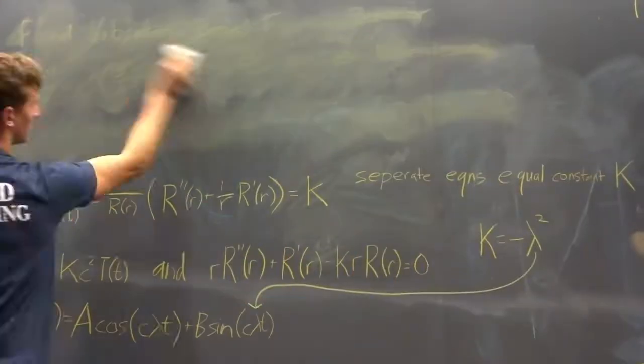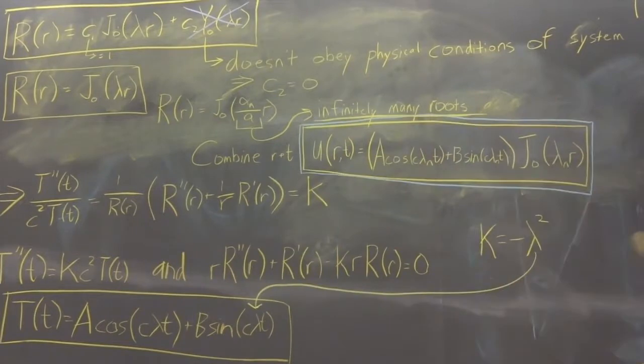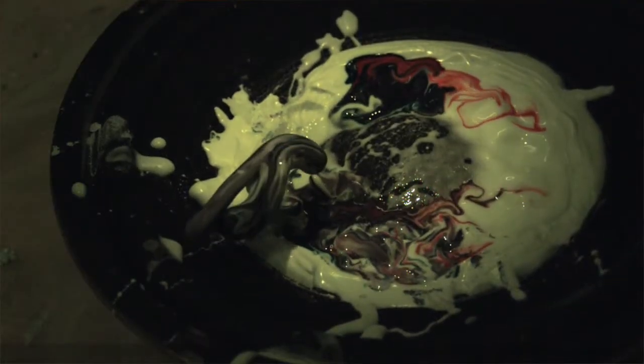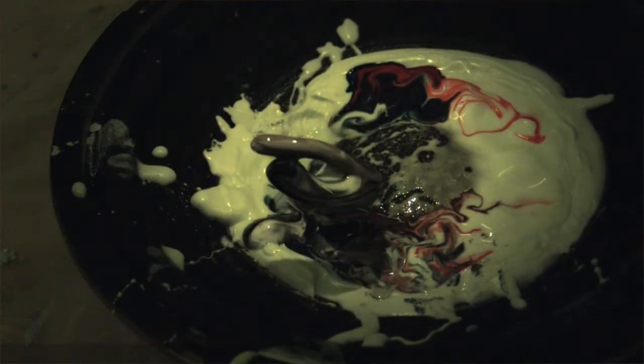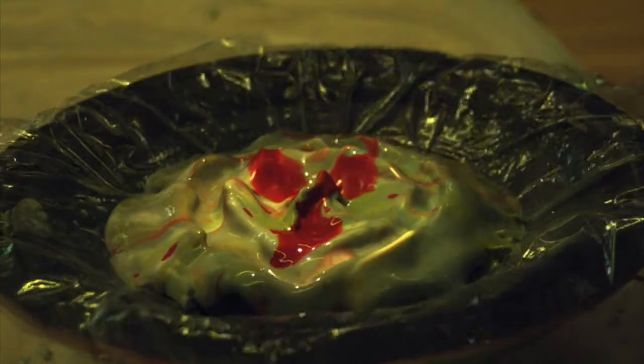The changing wave behavior at different frequencies corresponds to a different solution to the Bessel function. But do these patterns persist with a non-Newtonian fluid? When cornstarch and water are combined to create a fluid whose viscosity increases with shear rate, the fluid seems to behave differently than a Newtonian fluid like water. But in reality, it still follows the solution to the wave equation.